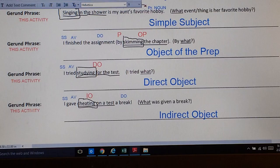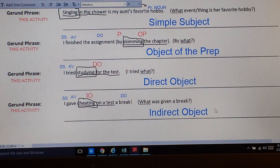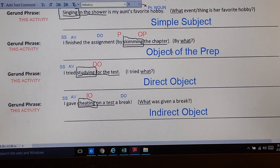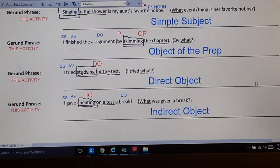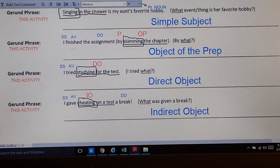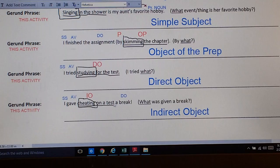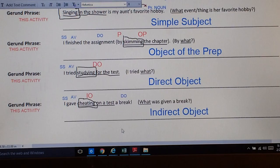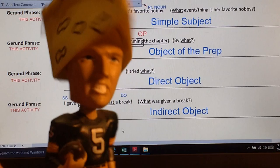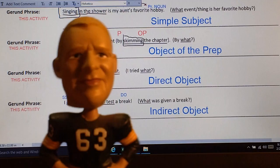Moving along to the next one. Our last gerund phrase. Our last type of verbal. I gave something a break. I gave a break. Direct object. To whom or what? What thing was given a break? Cheating on the test. This stands as an indirect object. And you can see. Nouns act as subjects. Objects of the preposition. Direct objects. Indirect objects. They could even act as a predicate noun. But we don't have that example here. And these gerunds. Gerund phrases. Ending in ing. Help us to understand that a little bit better. I gave this thing. Cheating on the test. A break. That stands as the indirect object.